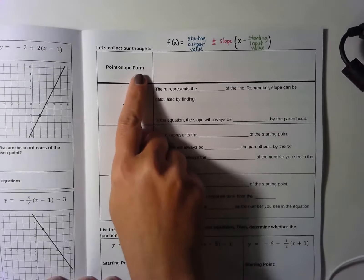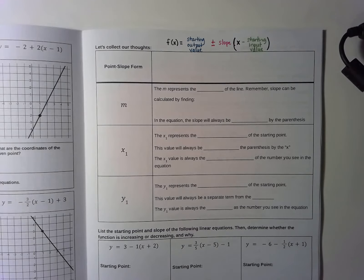Today we're going to talk about something called point-slope form of the equation of a line. This means it's an equation where we're going to be able to see the starting point and the slope just by looking at the numbers in the equation, without having to make a table of values.